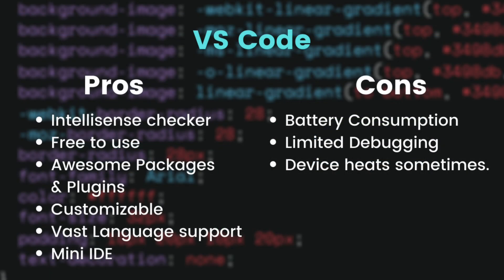Pros of VS Code: IntelliSense detects wrong syntax and asks you to correct it — it shows an error for wrong syntax and gives the right suggestion. It is free to use with a developer-friendly UI. It has multiple language support — you can code in Python, Ruby, and many others, not just front-end but also back-end. It is fast and lightweight. It has a built-in terminal useful for Node.js. It also has a vast number of packages and plugins available, plus a live preview function via the Live Server plugin.